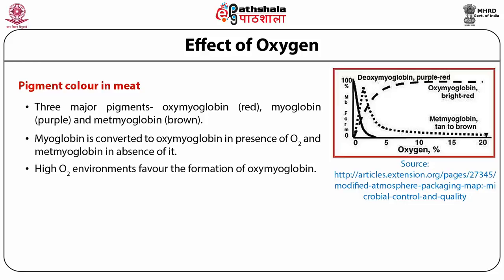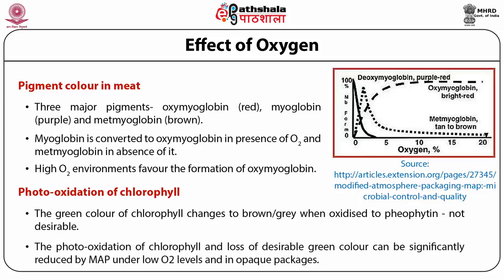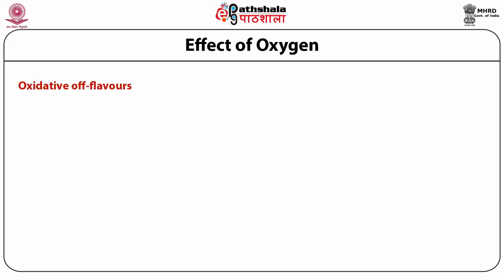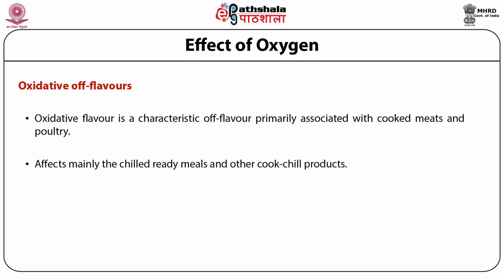High oxygen environments favor the formation of oxymyoglobin. The green color of chlorophyll changes to brown-gray when oxidized to pheophytin, which is not desirable. The photo-oxidation of chlorophyll and loss of desirable green color can be significantly reduced by MAP under low oxygen levels and in opaque packages. Oxidative off-flavors can be caused by numerous oxidative reactions in food and drink products. Oxidative warmed-over flavor is a characteristic stale flavor associated with cooked meats and poultry, affecting mainly chilled ready meals and other cooked chilled products.